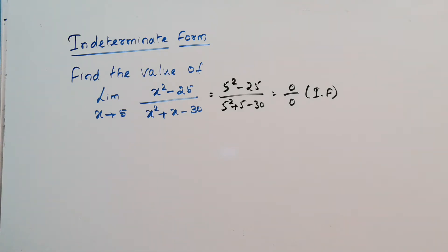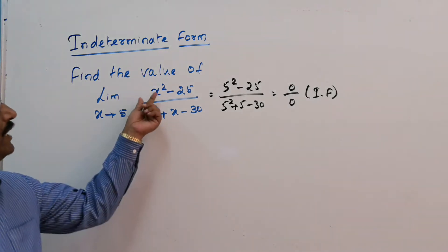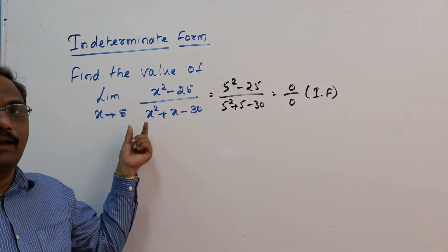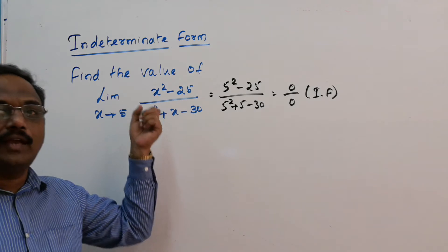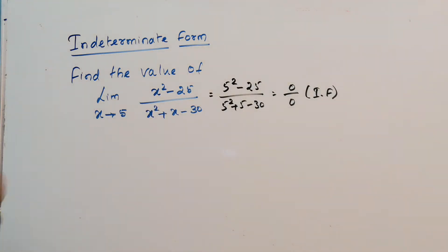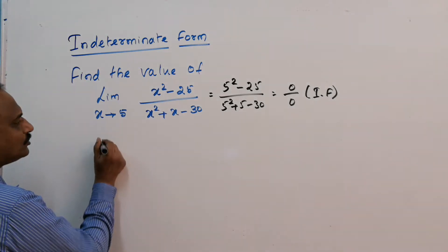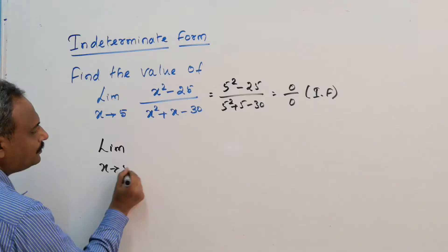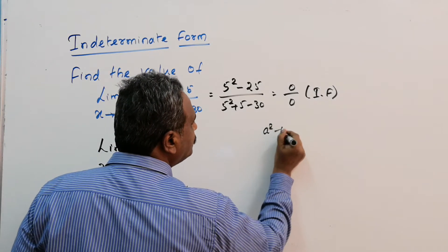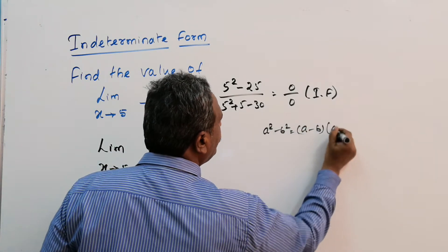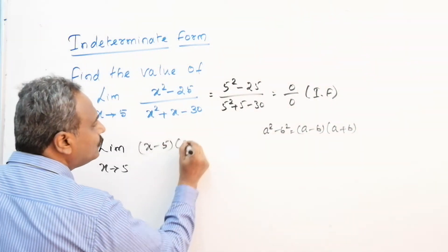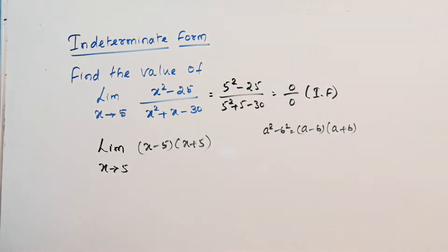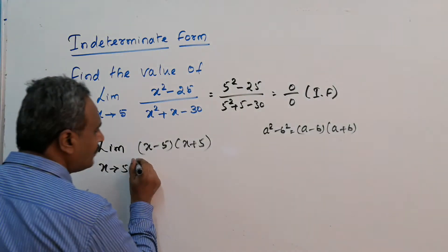Now we are going to factorize. In the numerator we have x squared minus 25, which is a quadratic. Using the identity a squared minus b squared equals (a minus b)(a plus b), we get x squared minus 25 equals (x minus 5)(x plus 5).